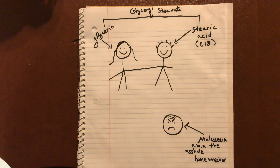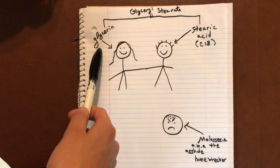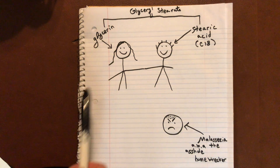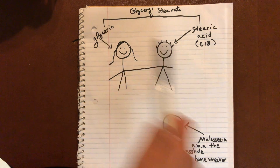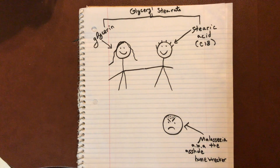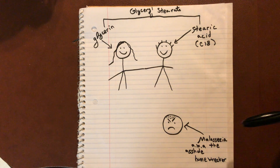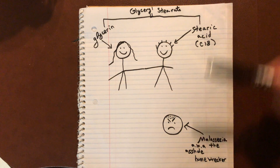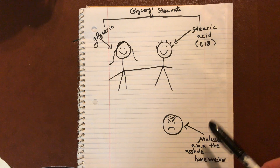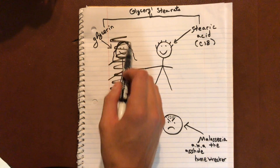Remember, this doesn't have to be glycerin — stearic acid is like a person in a polyamorous relationship, because this could be an alcohol like ethanol. If this was ethanol, this would become ethyl stearate instead of glycerol stearate. So what happens when malassezia hydrolyzes esters? I titled this 'malassezia, a.k.a. the asshole homewrecker,' because it's trying to get with stearic acid — it basically comes in and sabotages this relationship, getting rid of glycerin.